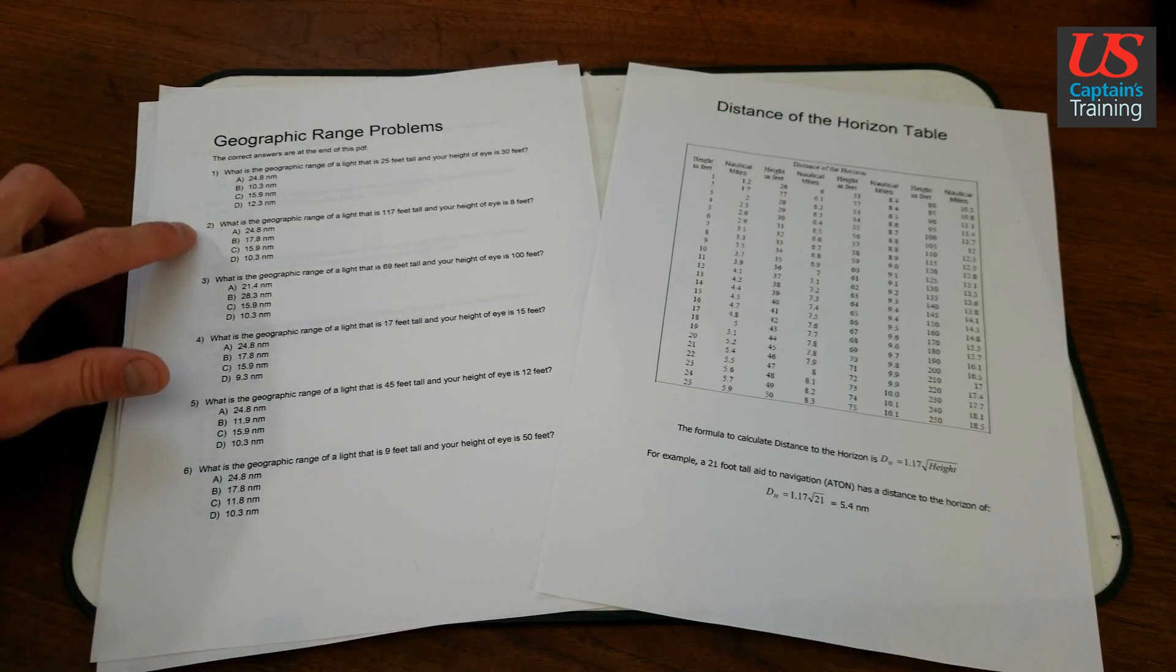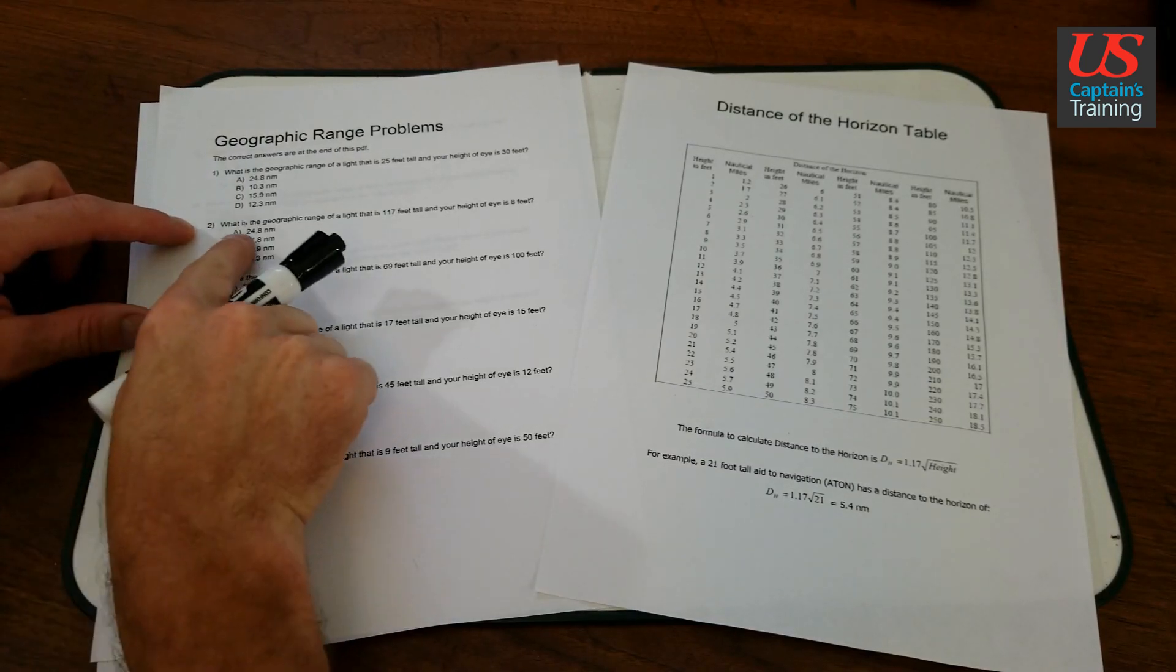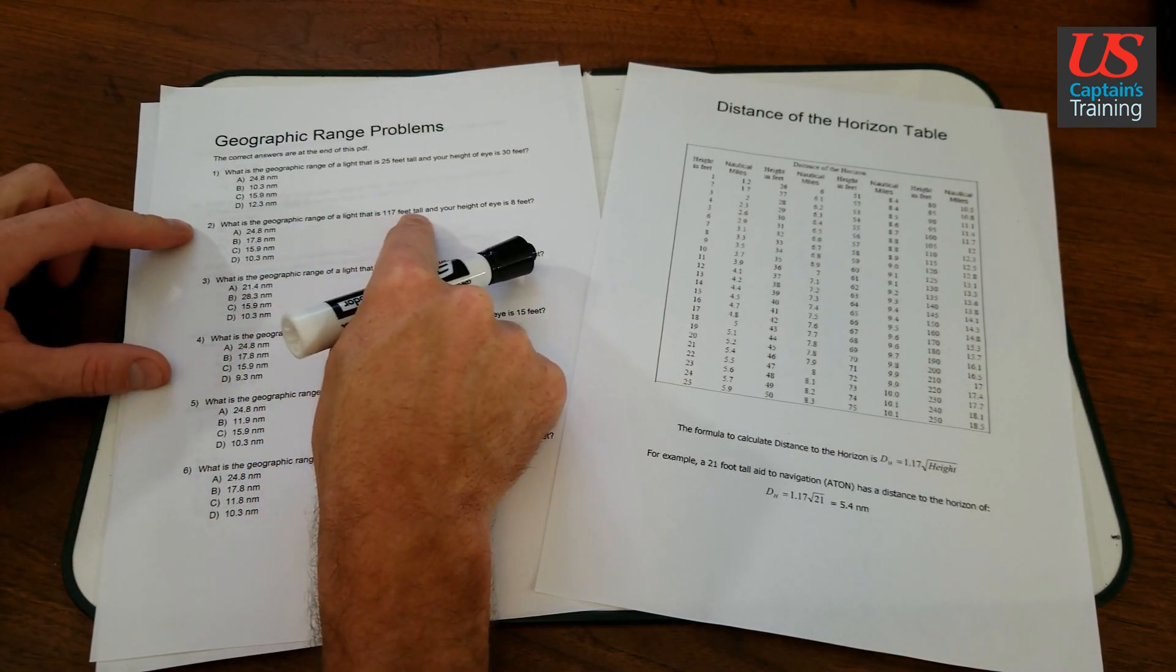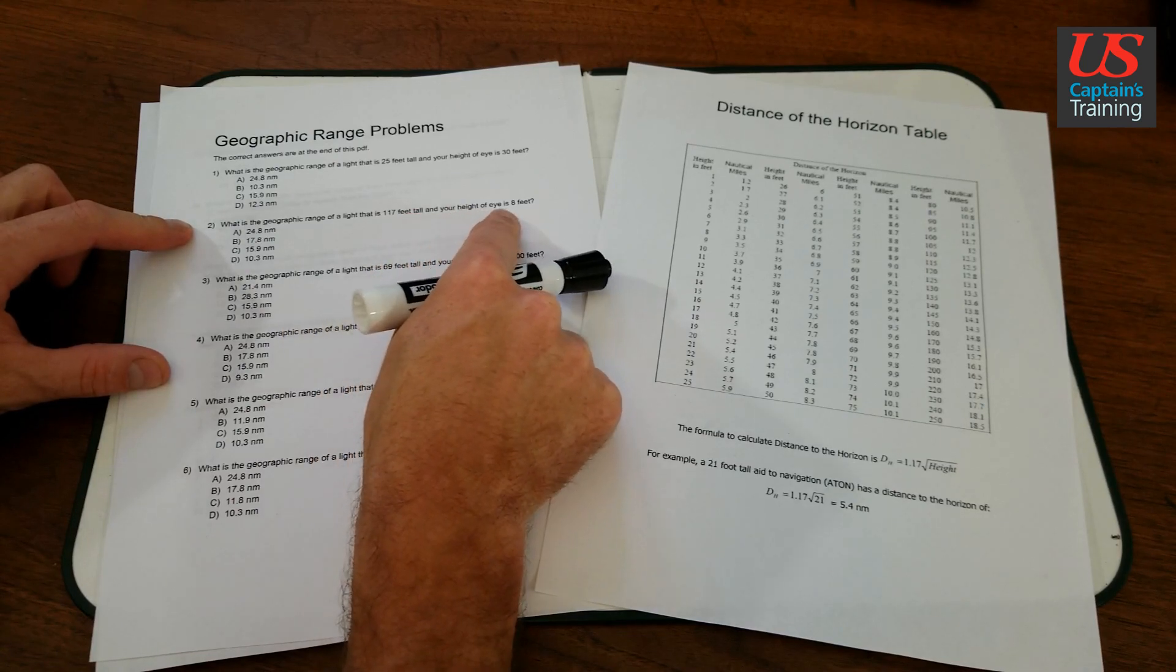Geographic range problem two. What is the geographic range of a light that is 117 feet tall and your height of eye is 8 feet?